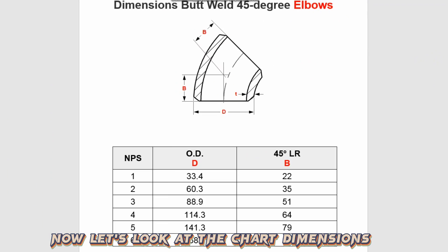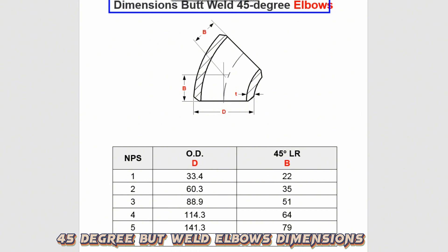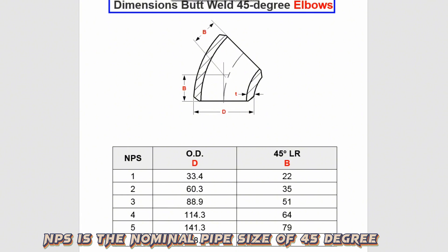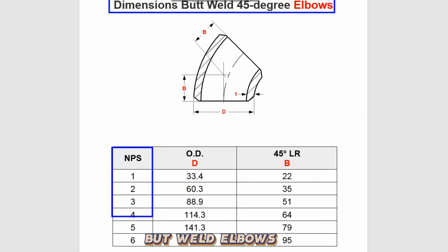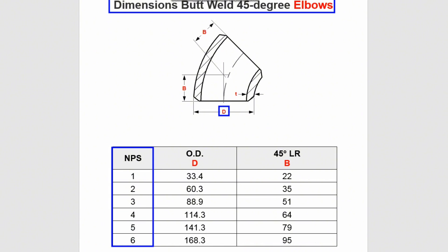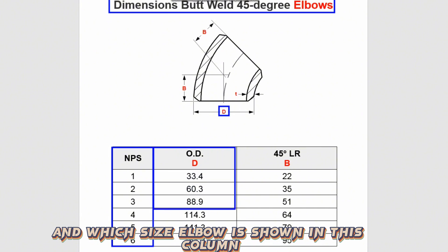Now let's look at the chart dimensions to find out 5-inch 45-degree butt-weld elbows dimensions. NPS is the nominal pipe size of 45-degree butt-weld elbows. D is outside diameter of 45-degree butt-weld elbows.